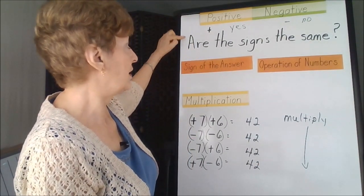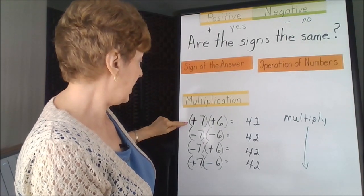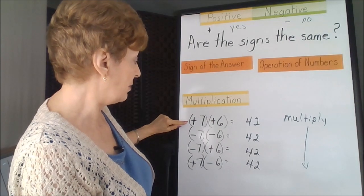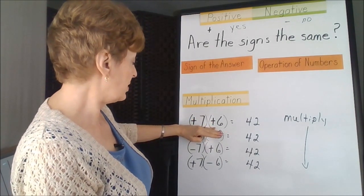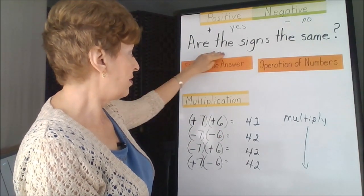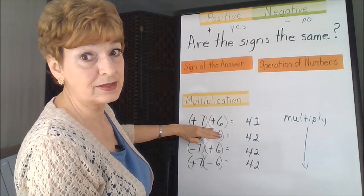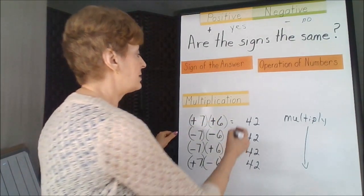This is where the question comes in now. You're going to be looking at the signs of the numbers that precede the seven and the six. So in the first one, are the signs the same? Well, yes they are. I have two plus signs or two positive signs. So that's going to make my 42 positive.